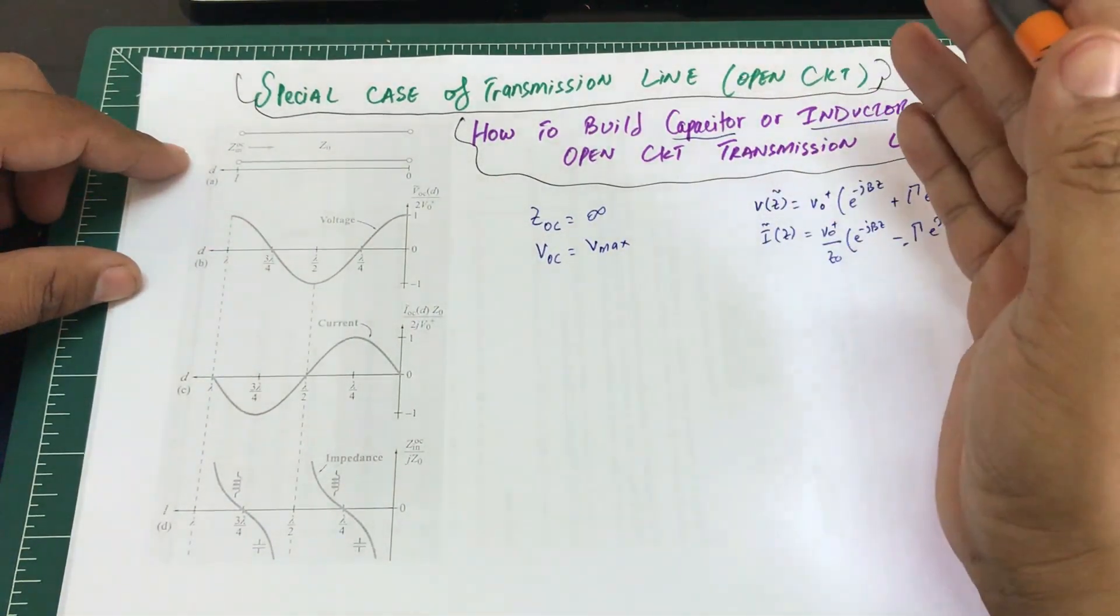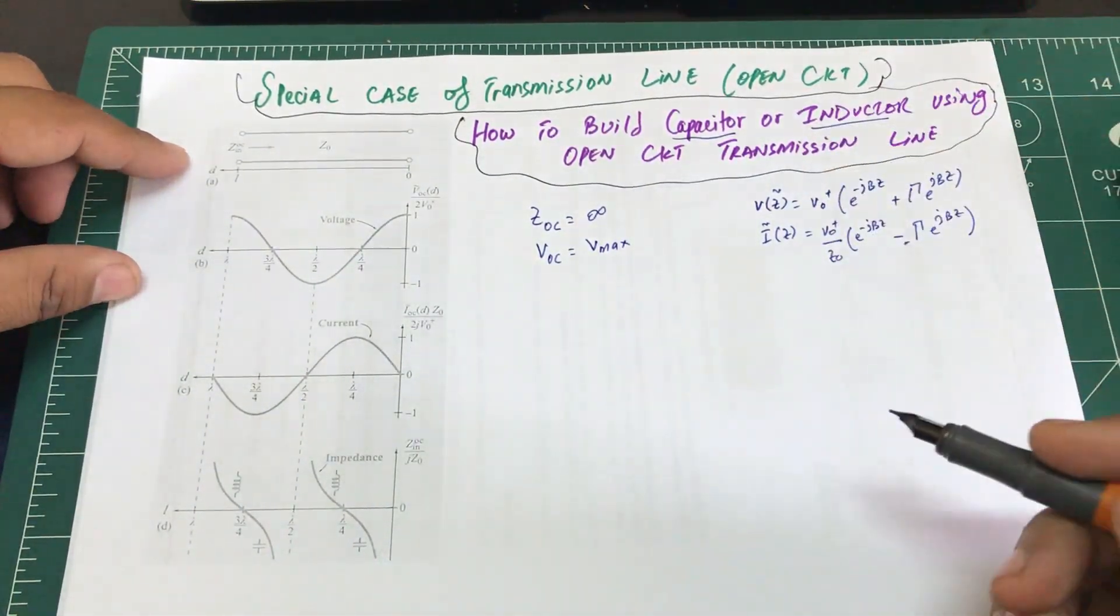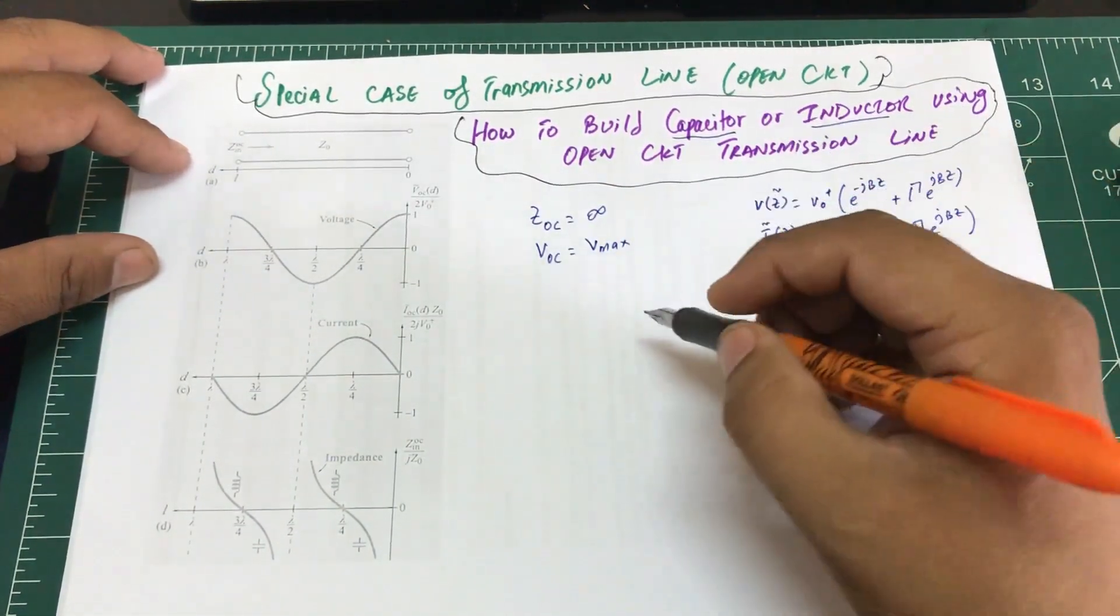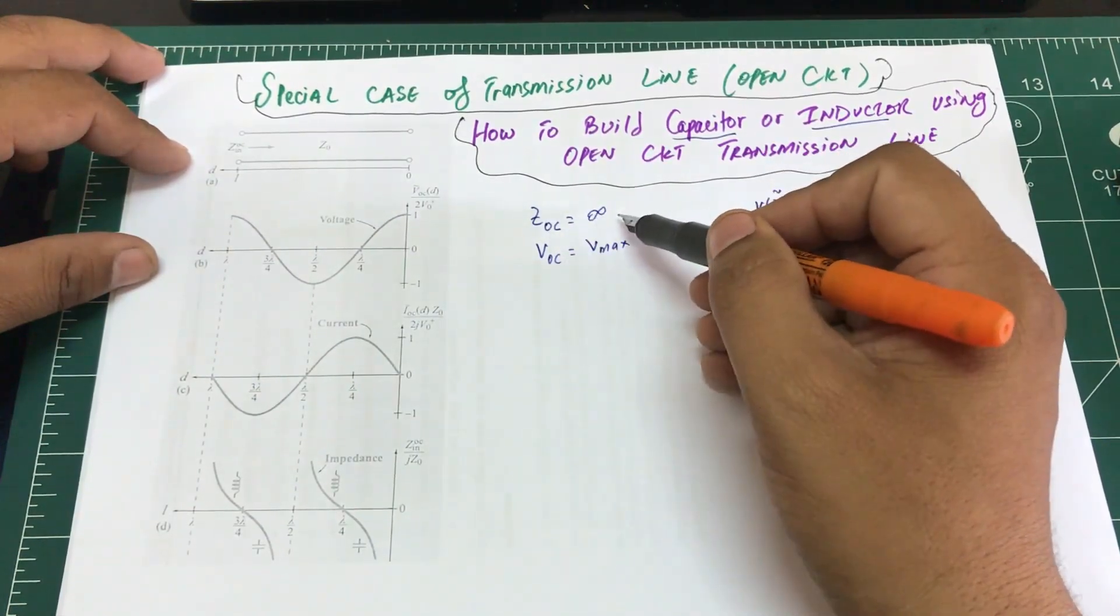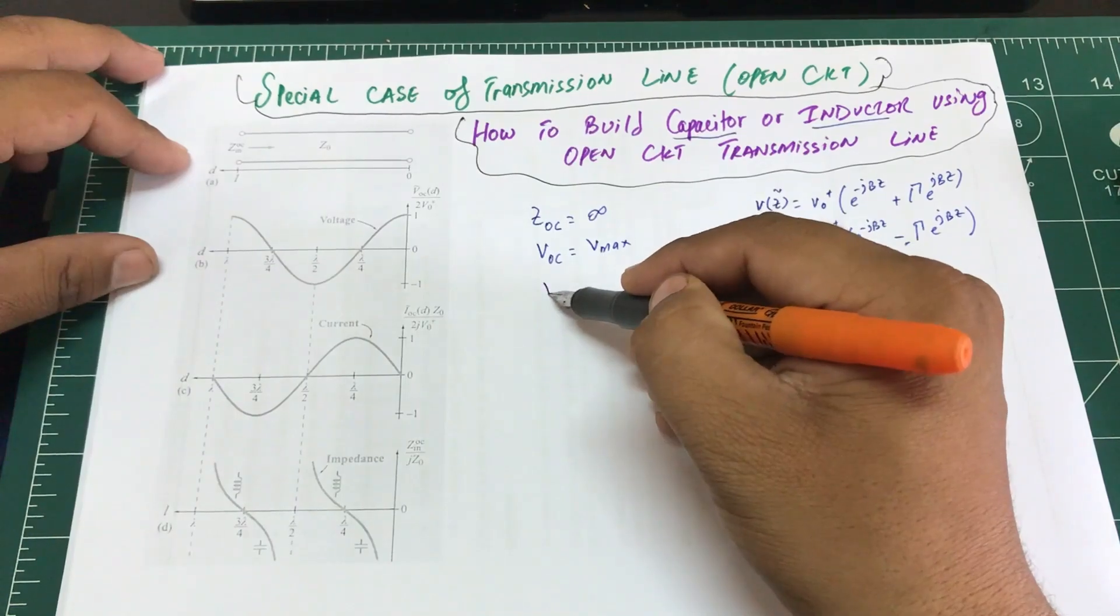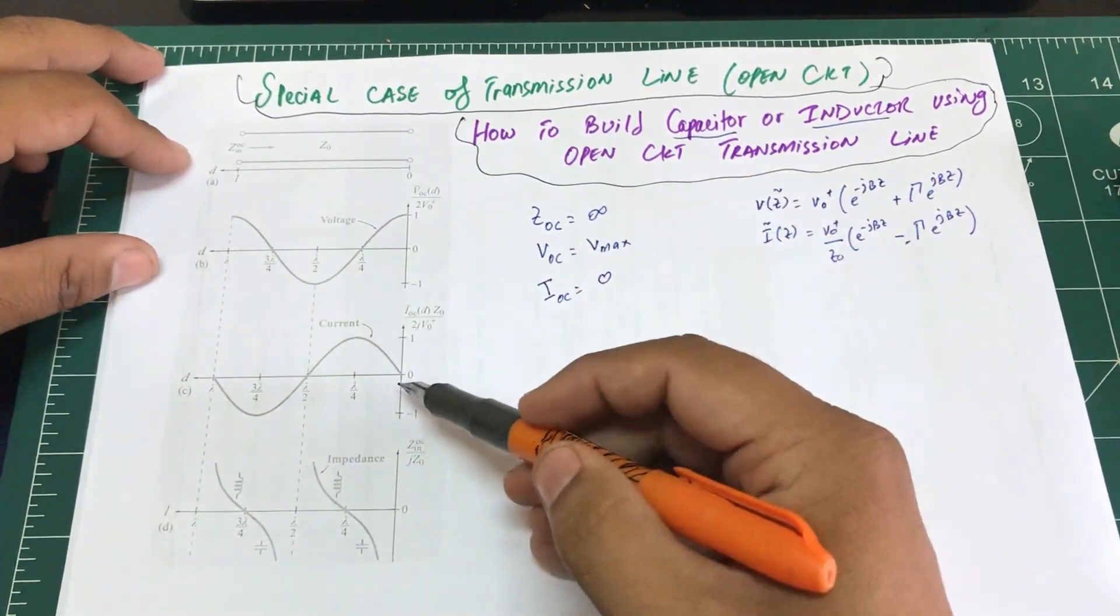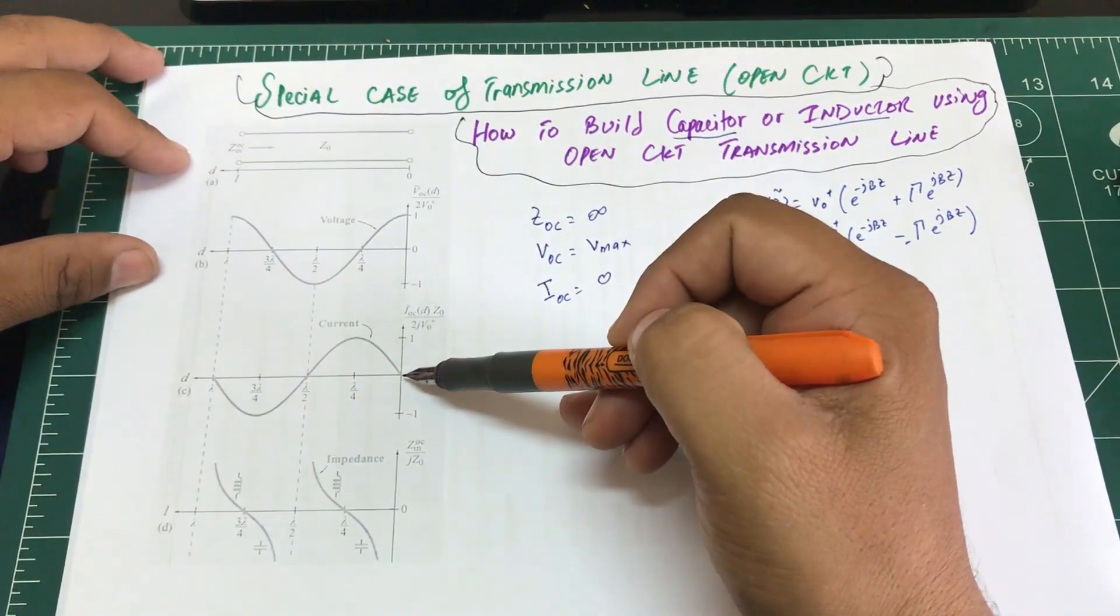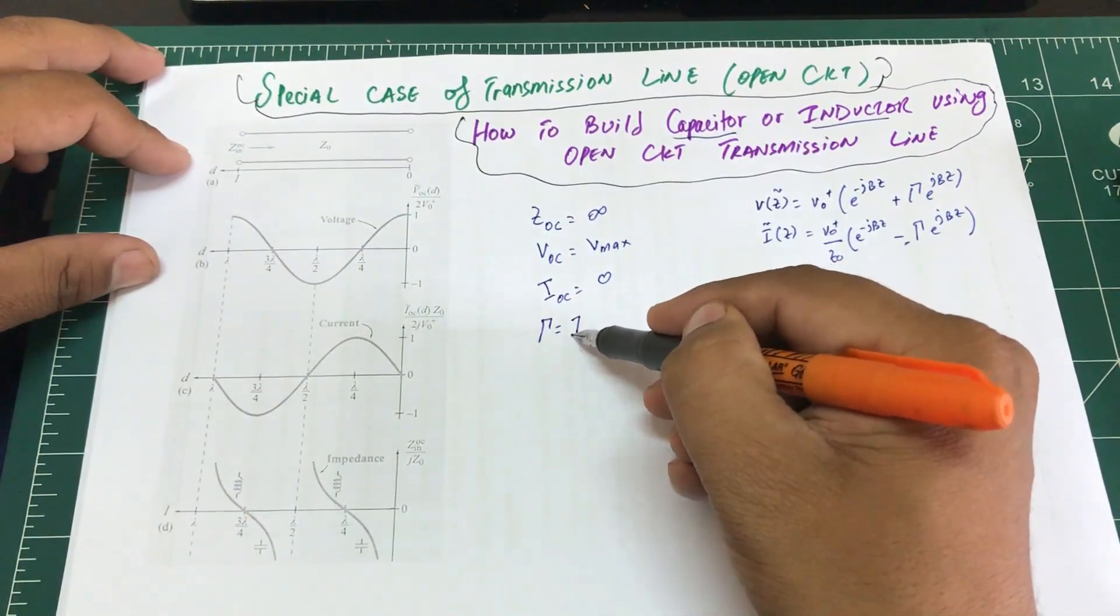You can also look at my video on the demonstration of these three scenarios. So we know this is impedance, this is voltage. What about current? Current in an open circuit is actually zero, as you can see by the graph. So voltage is maxima, current is at zero, and what is the reflection coefficient? Reflection coefficient is one.